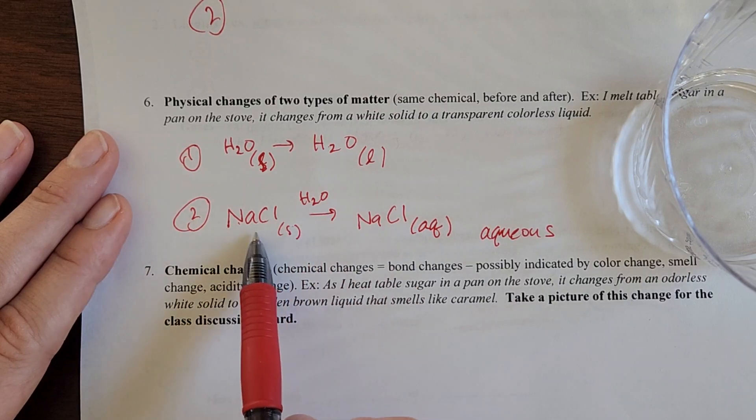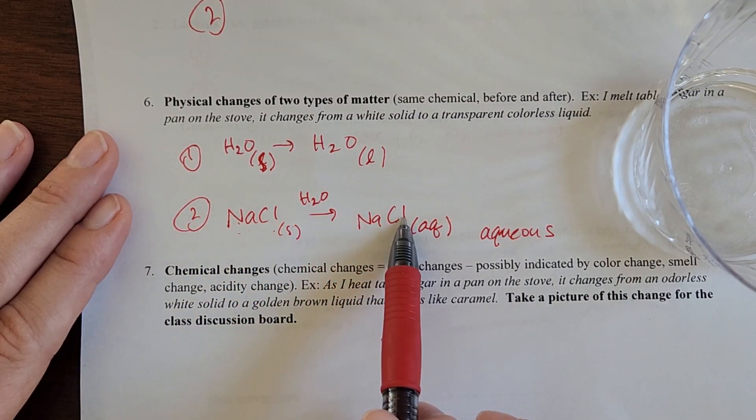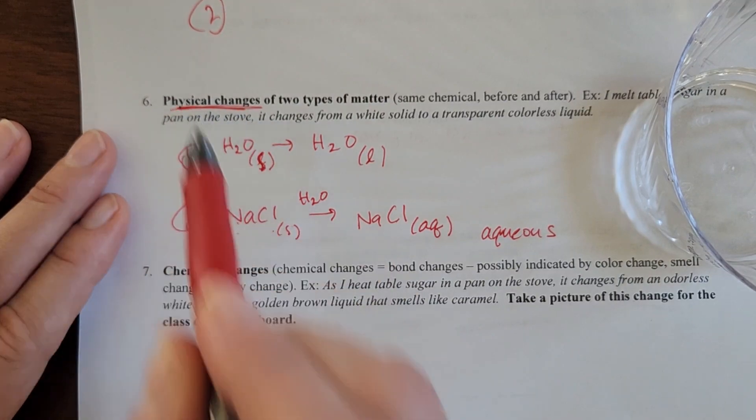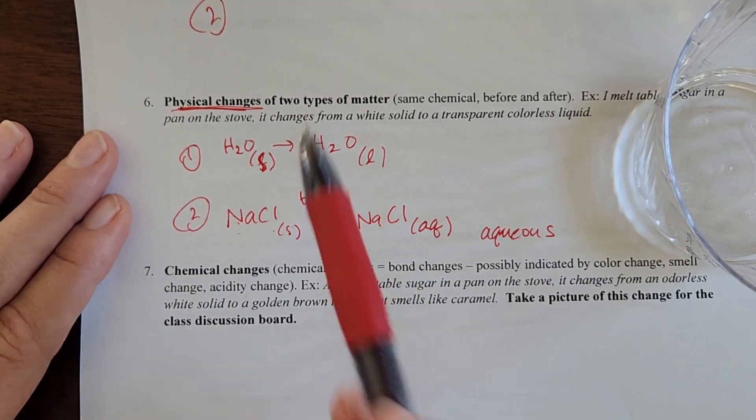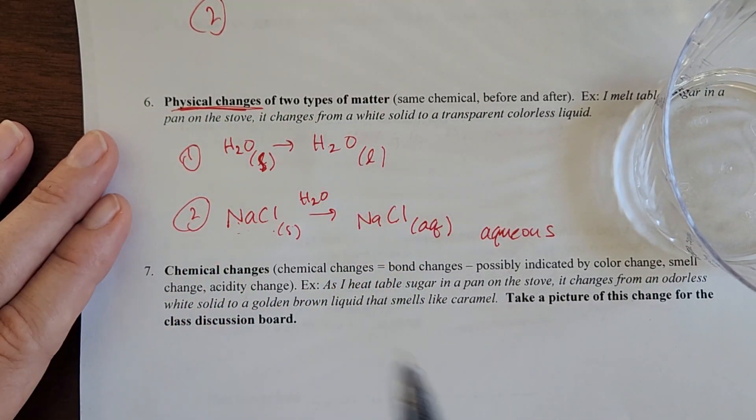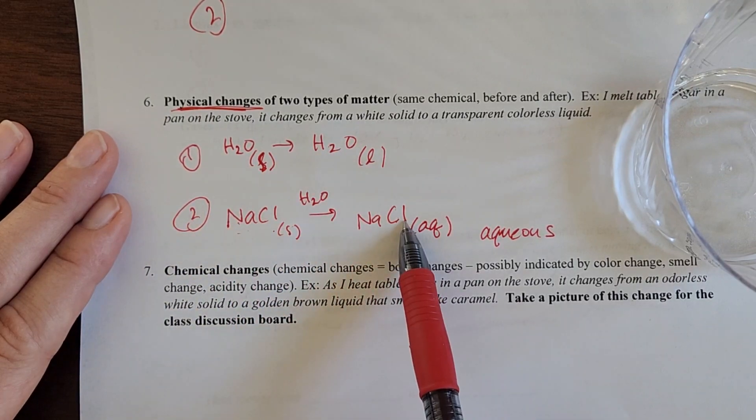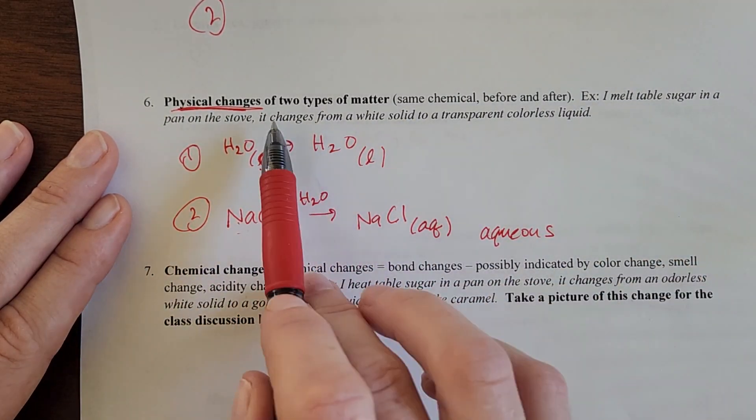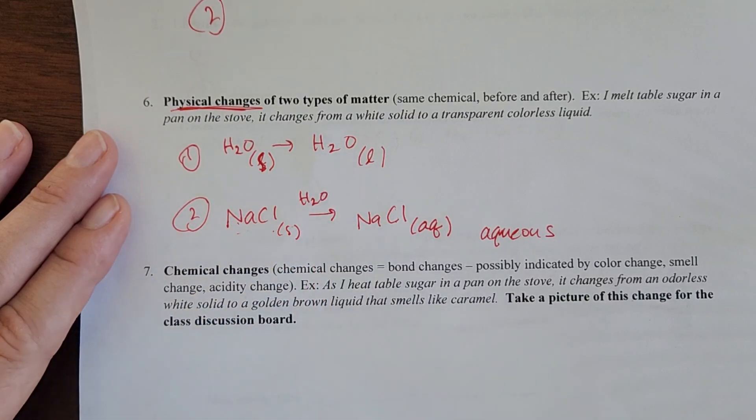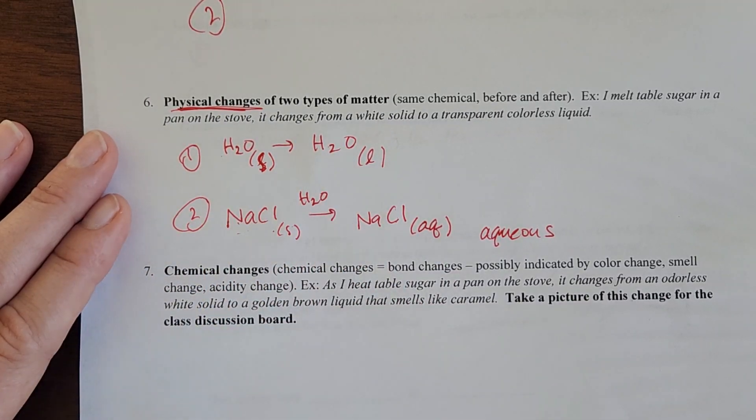NaCl to NaCl. Notice the chemical hasn't changed, that's how I know it's a physical change. You don't have to necessarily write these reactions out, you can just put words like you see here. But I want to start introducing you to the fact that we can write these also in a chemical equation style.